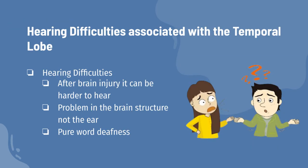Furthermore, I'm going to be talking about hearing difficulties associated with the temporal lobe. After a temporal lobe injury, it can be hard to interpret sounds, and it can also be hard to hear them. This is why some people experience hearing loss after brain injury — the problem is not really in the ear itself, but in the brain structures responsible for processing sound. A person with temporal lobe damage can also experience something called pure word deafness, where a person is deaf only to spoken words but has no problem hearing other sounds.